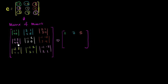Moving to the middle row: negative 2 times 5 is negative 10 minus 4 times 2, so negative 10 minus 8, which is negative 18. Then negative 1 times 5 is negative 5 minus 3 times 2, so negative 5 minus 6, which is negative 11. And the next one: negative 1 times 4 is negative 4 minus negative 6, so negative 4 plus 6, which is positive 2.